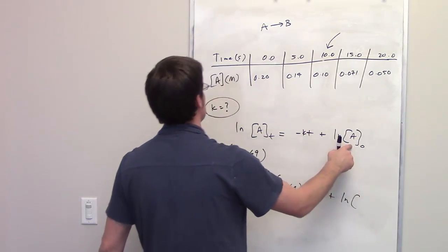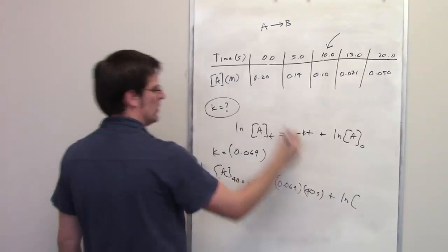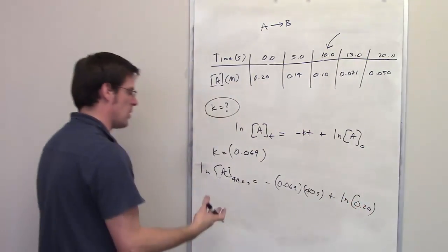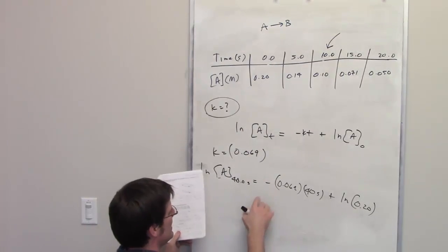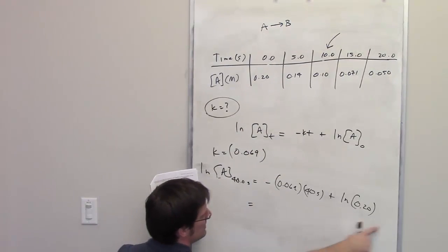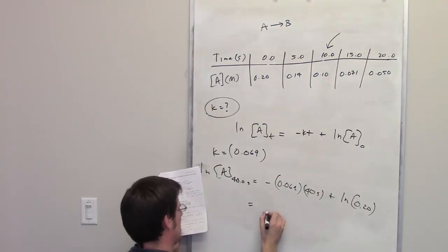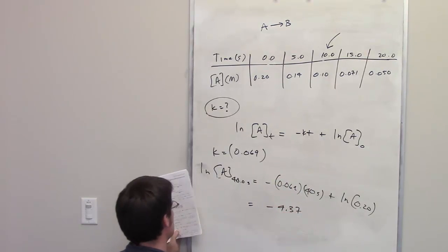What was the concentration of A at time zero? At time zero, A was 0.2. So I can go ahead and throw that into my calculator. When I do that, the ln of 0.2... All of this junk here to the right, I ended up getting all of that coming out to negative 4.37.